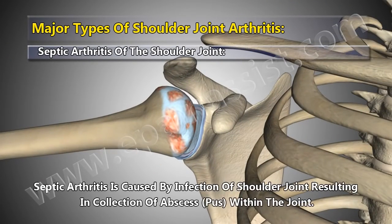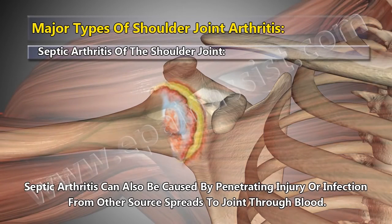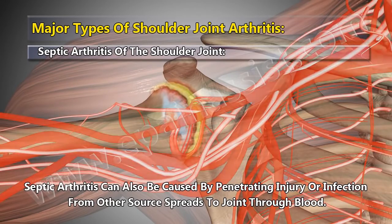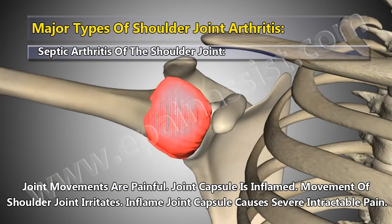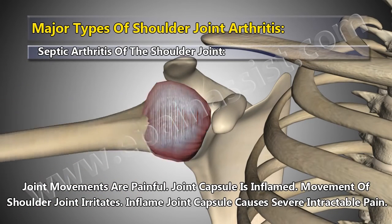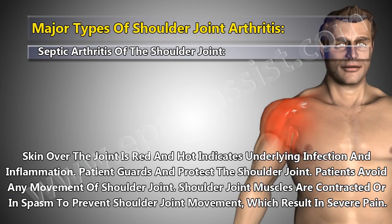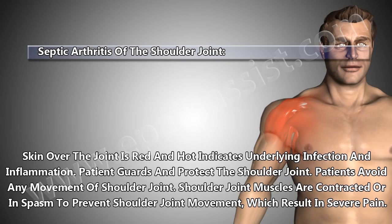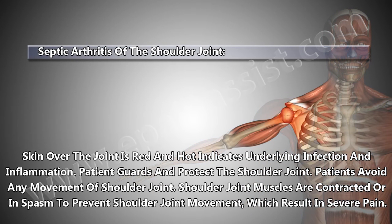Septic arthritis is caused by infection of the shoulder joint, resulting in collection of abscess and pus within the joint. It can also be caused by penetrating injury, or infection from another source spreading to the joint through blood. Joint movements are painful, the joint capsule is inflamed, and movement irritates the inflamed capsule causing severe intractable pain. Skin over the joint is red and hot, indicating underlying infection and inflammation. The patient guards and protects the shoulder joint, avoiding any movement, while shoulder joint muscles contract or go into spasm to prevent movement, resulting in severe pain.